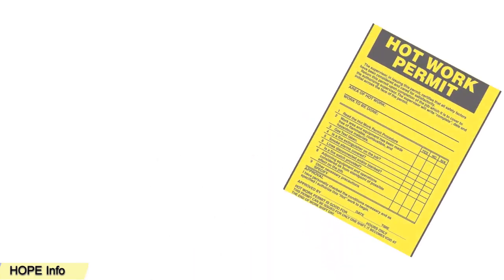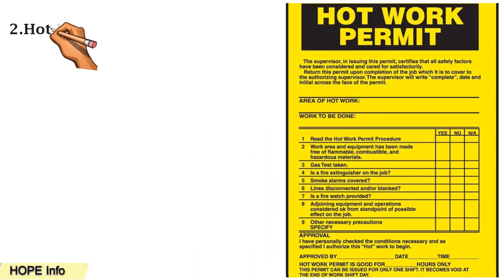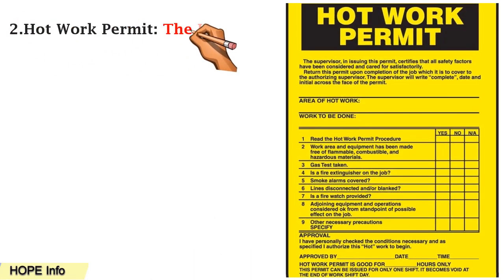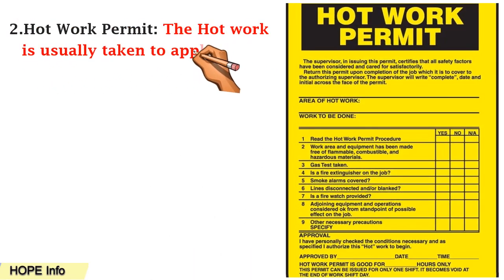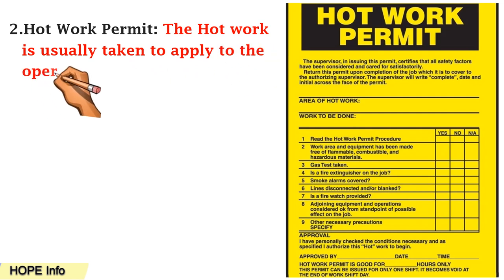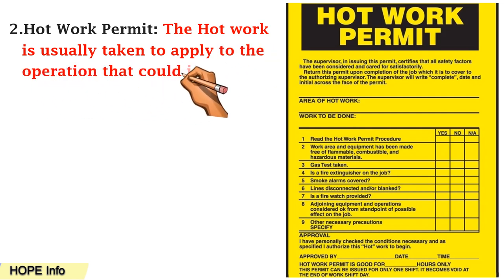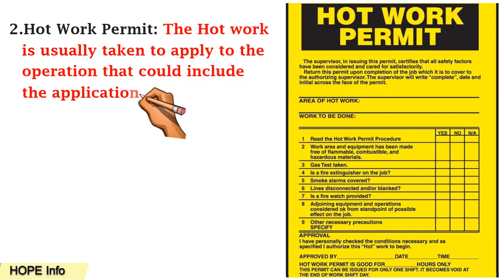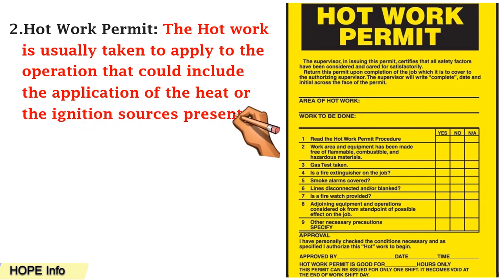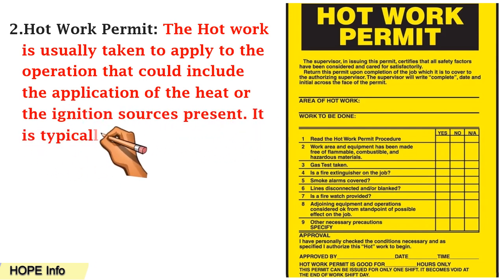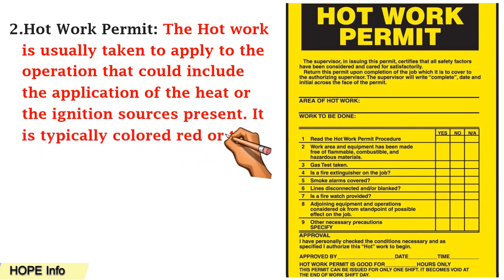Number two is the hot work permit. The hot work permit is usually taken to apply to operations that could include the application of heat or an ignition source. It is typically colored red, with a red edge, though sometimes a yellow color is also used.